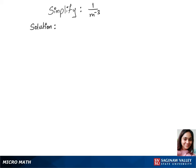To simplify 1 over m power minus 3, we will use the negative rule of exponents. We can write this as 1 over 1 over m power 3. Then 1 over 1 over m power 3 gets flipped, and we can write this as m power 3. This is our final answer.